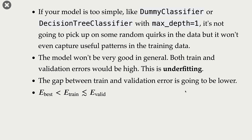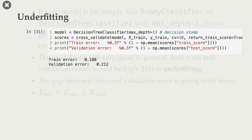In the underfitting scenario, both train and validation errors are kind of high, but the gap between them is kind of low. So E-best is less than E-train, which is less than or equal to E-valid. E-train and E-valid are close to each other — it's possible they're equal, but usually E-train is slightly smaller than E-valid.